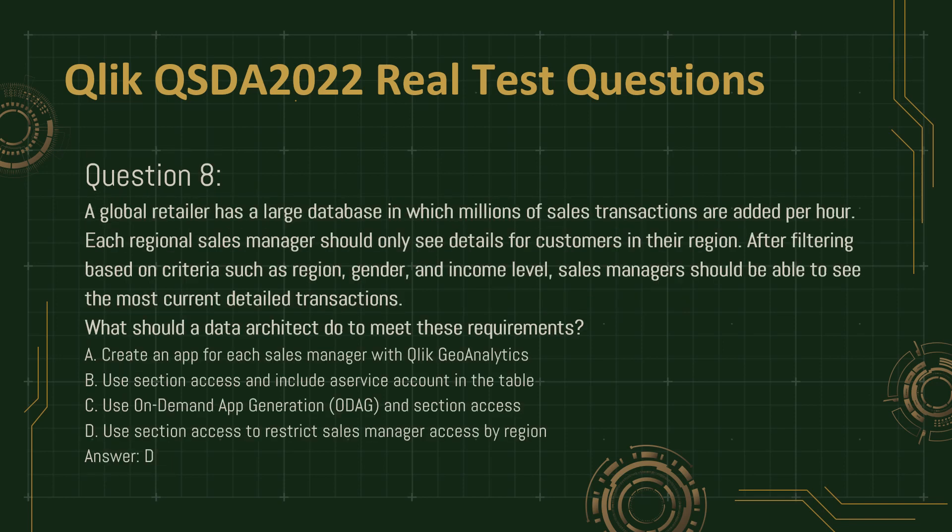Question 8. A global retailer has a large database in which millions of sales transactions are added per hour. Each regional sales manager should only see details for customers in their region. After filtering based on criteria such as region, gender, and income level, sales managers should be able to see the most current detailed transactions. What should a data architect do to meet these requirements?